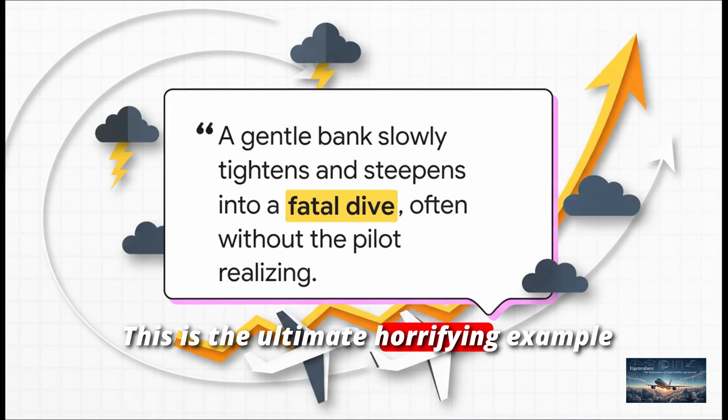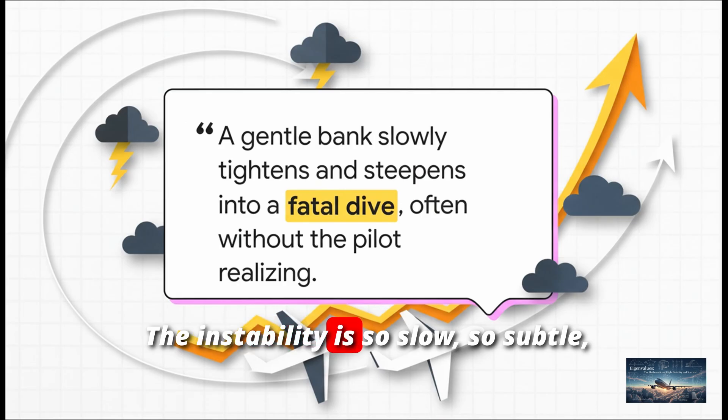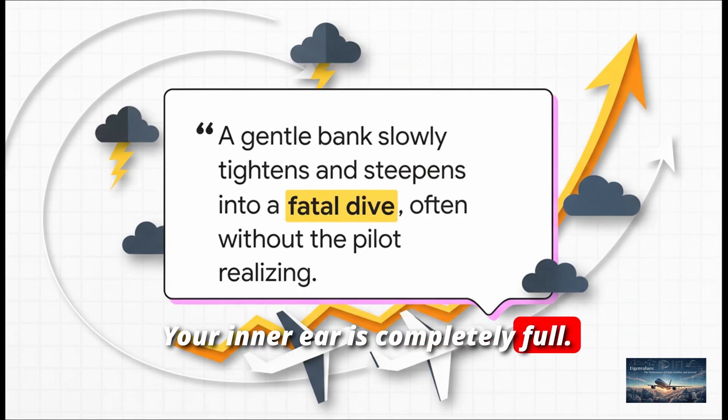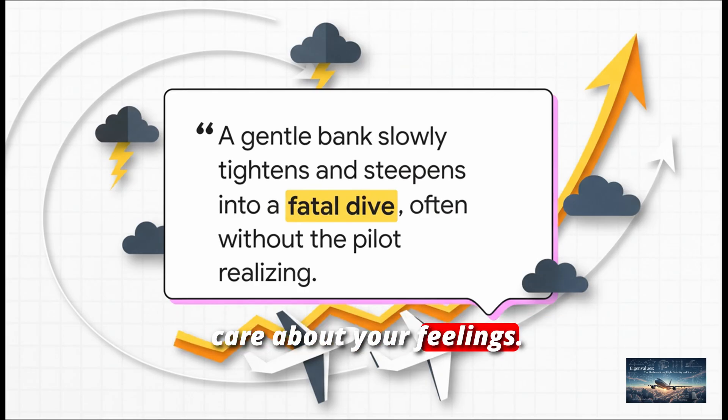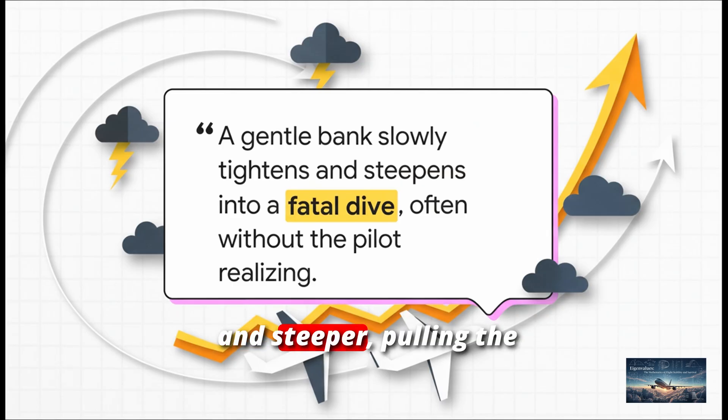This is the ultimate horrifying example of a positive sigma in action. The instability is so slow, so subtle, that if you're flying in the clouds, your body can't even feel it. Your inner ear is completely fooled, but the math doesn't care about your feelings. That positive eigenvalue guarantees that the bank gets steeper and steeper, pulling the plane into a dive it can't recover from.